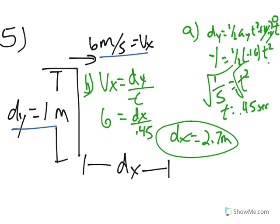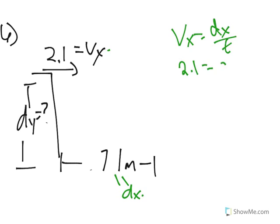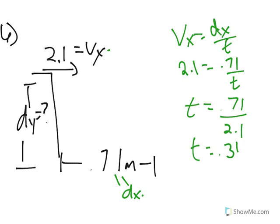Number 6: Melanie rolls a 10 gram marble off a ramp with a horizontal velocity of 2.1 meters per second. The marble falls into a cup 0.71 meters away from the table's edge. How high is the table? First, find time. We know 0.71 is dx, and we have vx, so we use vx equals dx over t: 2.1 equals 0.71 over t, so t equals 0.71 divided by 2.1, which gives t equal to 0.34 seconds.